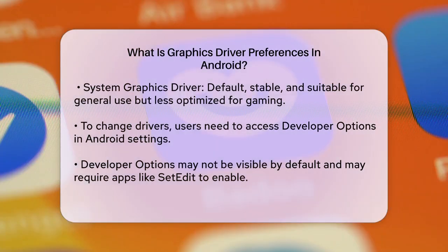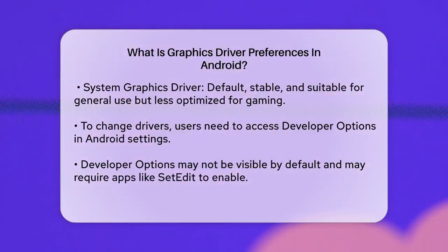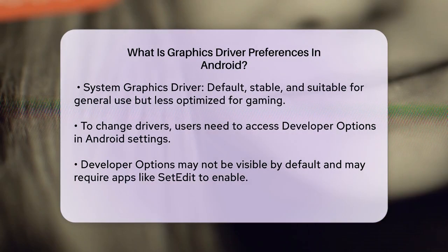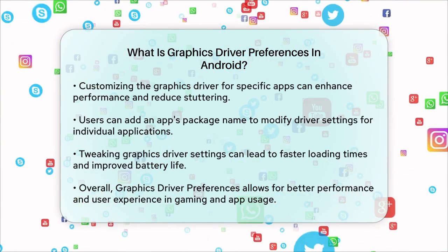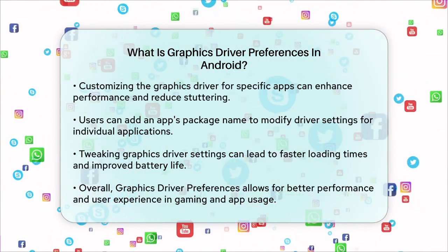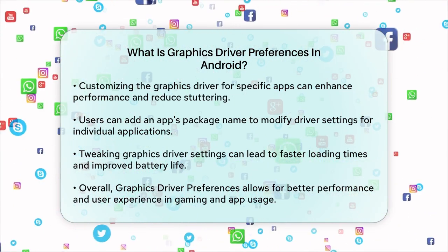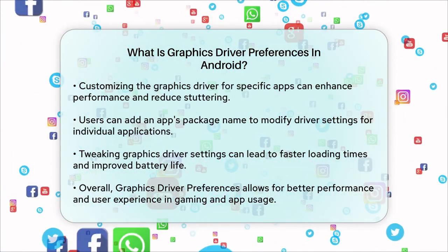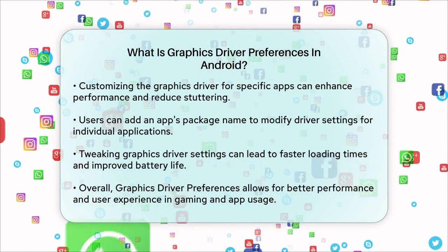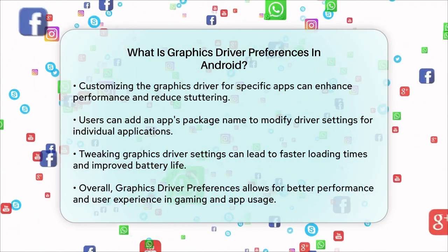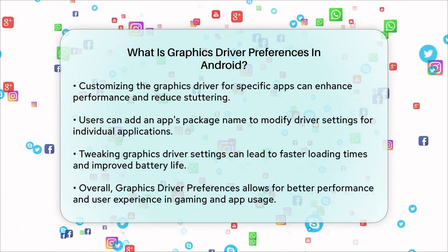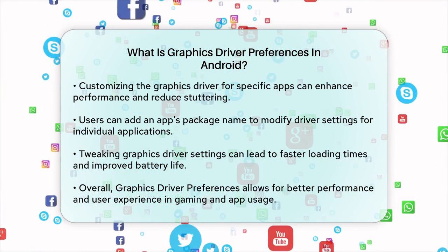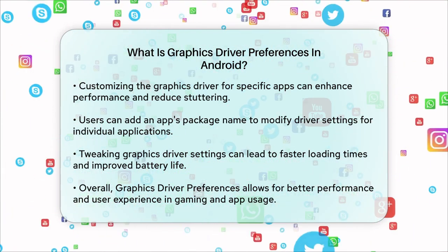For example, if you want to use the Game Driver for a specific app like YouTube, you would need to add the app's package name, e.g. com.google.android.youtube, to the appropriate setting in the database. This allows you to customize the graphics driver for each app, which can improve performance, reduce stuttering, and even enhance battery life.